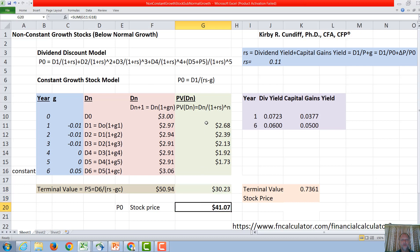We now sum all of these values, all the dividends, or the present value of all the dividends, plus the present value of the terminal value, and get our stock price is $41.07.